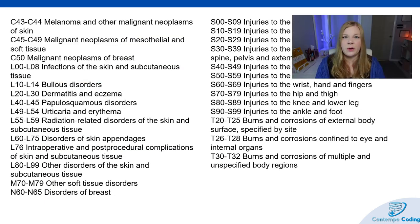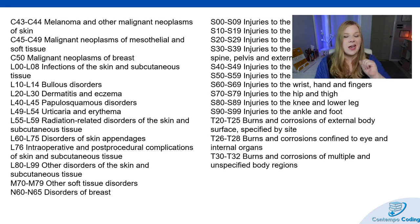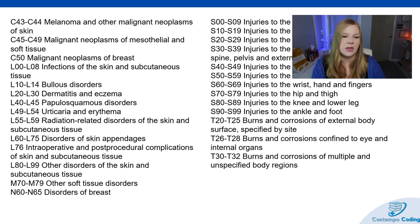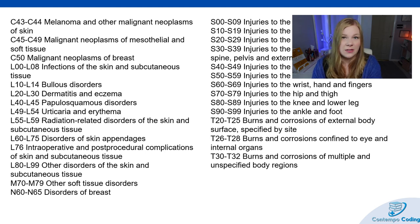With ICD-10-CM codes, think about lesion codes. When coding lesions, some have their own specific alphabetic index entry — things like seborrheic keratoses, actinic keratoses. If it doesn't have its own alphabetic index entry, like basal cell carcinoma or squamous cell carcinoma, you'll find those in the neoplasm table. For example, for squamous cell carcinoma of the shoulder, go to the neoplasm table, look under neoplasm → skin → shoulder. The tabular list will then help determine whether it's squamous cell, basal cell, melanoma, etc.